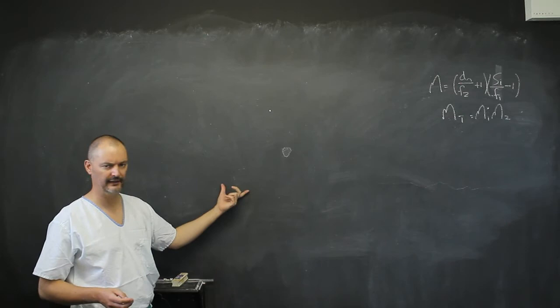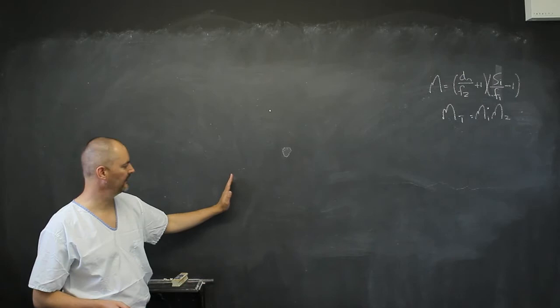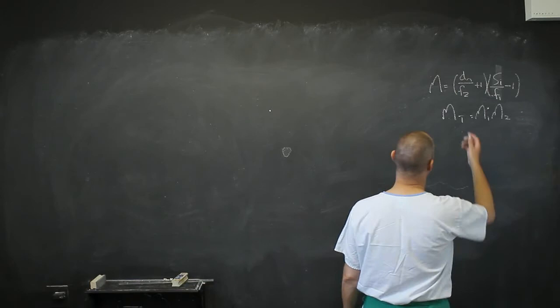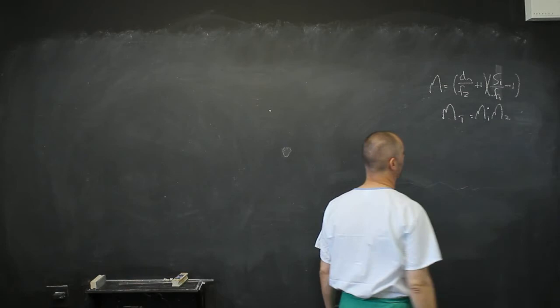And we used the fact that you first look at the first lens, it creates an image, and that image becomes the object for the second lens. And we have the two equations there, the magnification in total of these two lenses is the magnification of the first lens times the magnification of the second lens.